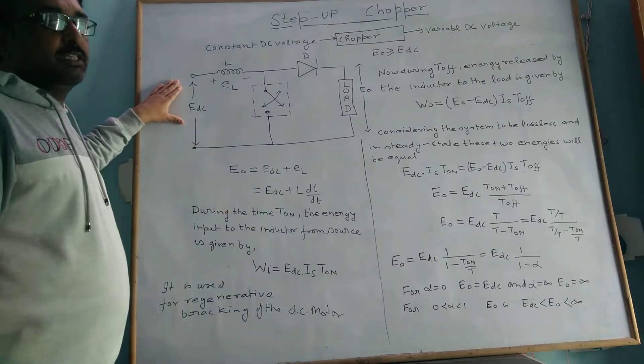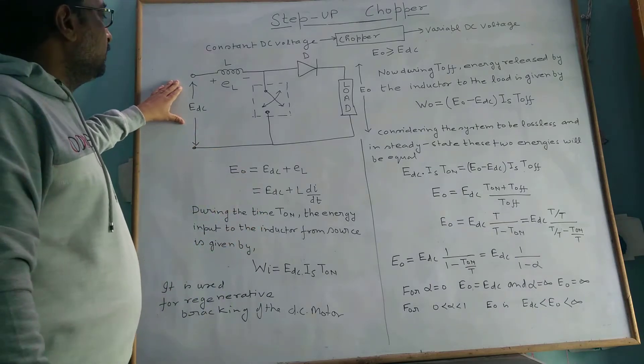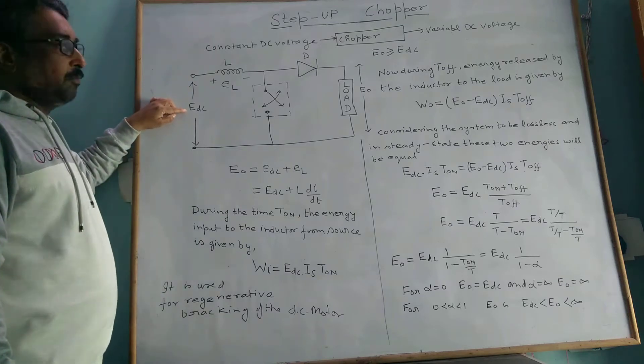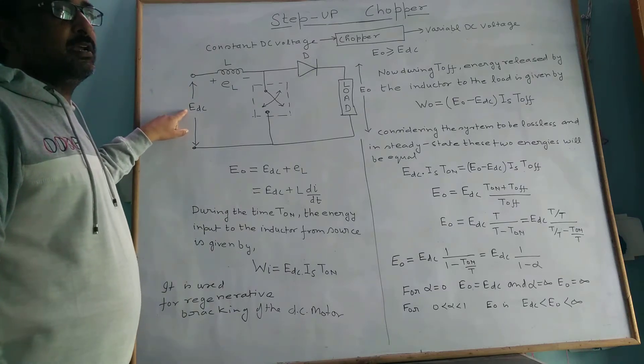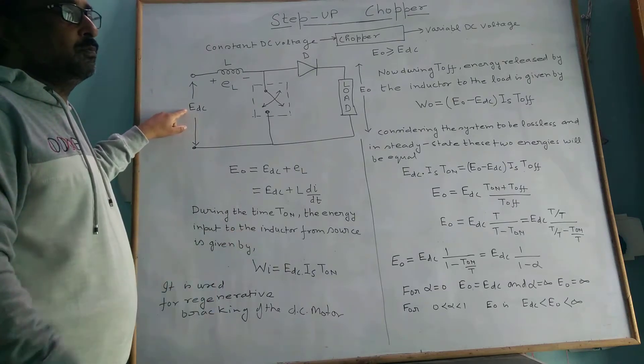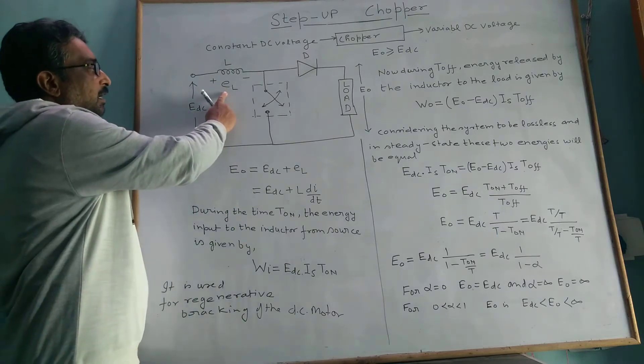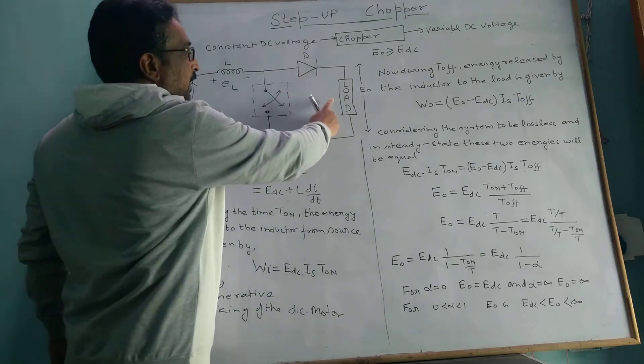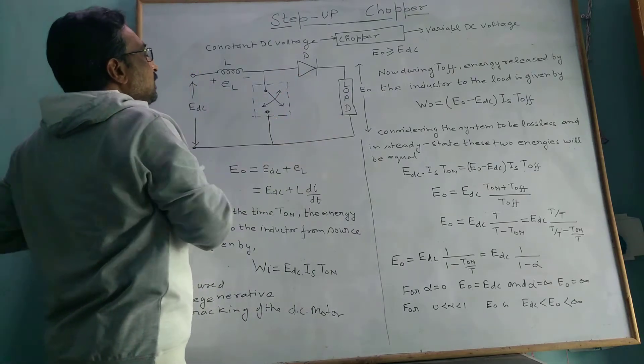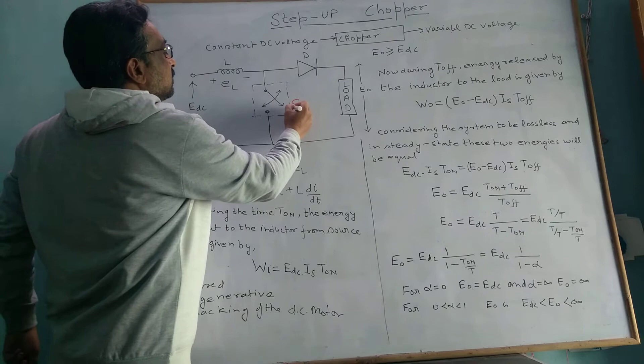Now see this circuit. We have input E_DC battery, constant voltage source which is used for DC, an inductor, diode, load, and the switch which is the chopper.